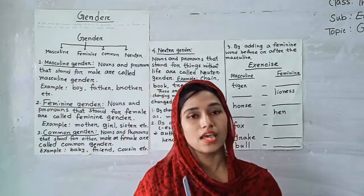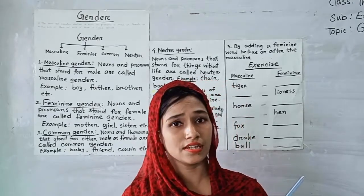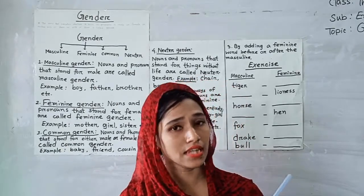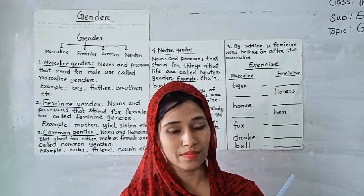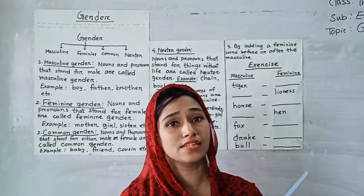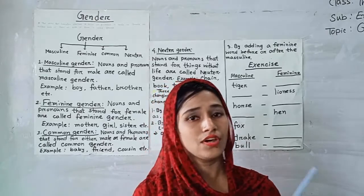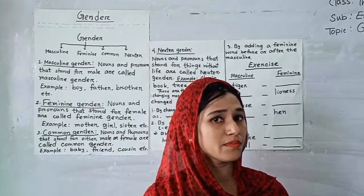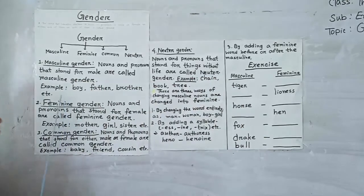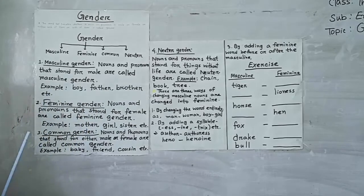Dear students, about masculine gender, I want to say that masculine gender is that type of gender — a noun or pronoun that stands for a male person. For example, boy, father, brother, etc. are examples of masculine gender.